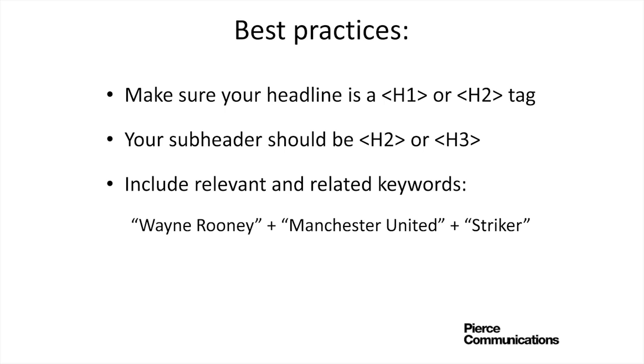So what can you do to make sure that your article headlines and subheaders are understood by Google and that you get maximum value from them? Well, first of all, you should make sure that your headlines use H1 and H2 header tags, which are HTML tags used to indicate the topic and subheadings of the content. Ideally, your headline is the H1 tag and your subheader is the H2 tag. For some websites, the H1 tag is already being used — for example, for the name of the entire website — in which case your article headlines should be the H2 and your subheader should be the H3 tag.